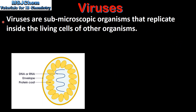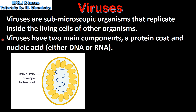Viruses are sub-microscopic organisms that replicate inside the living cells of other organisms. Viruses have two main components: a protein coat and nucleic acid, which can be either DNA or RNA. Here we have the general structure of a virus — the nucleic acid, which can either be DNA or RNA, and the protein coat.